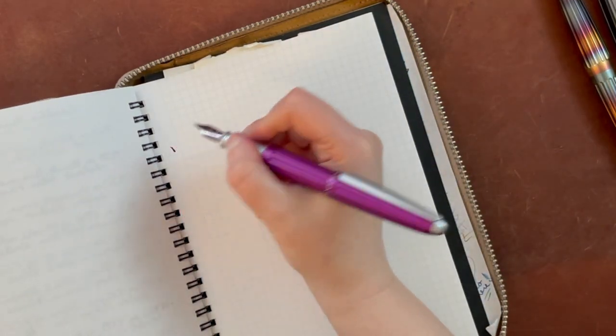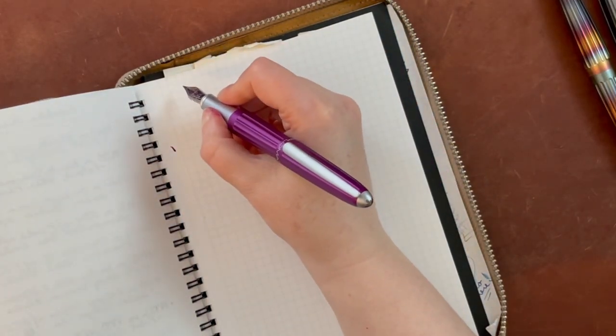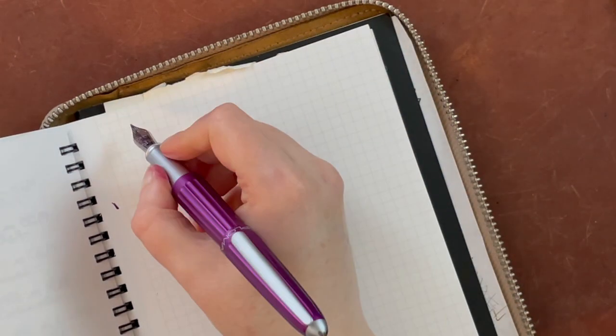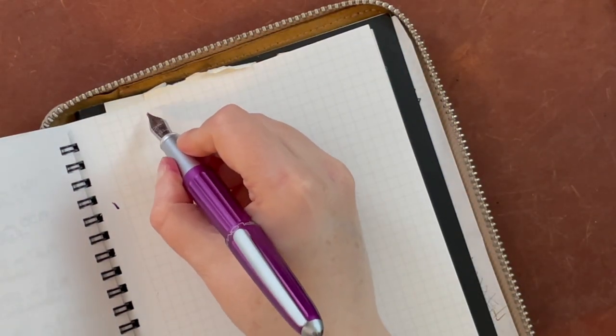And I'm going to do the cursive italic first. I just re-inked it after it being kind of dry for a while and I didn't clean it out. So we'll see how well it works. Let's see. Oh yeah, we're doing good. Okay. So let me get in even further so you can see a little bit better and make sure it's in frame.